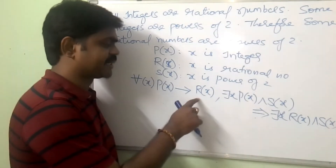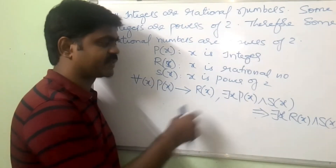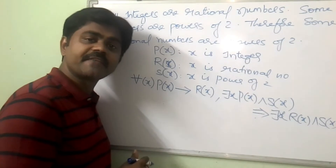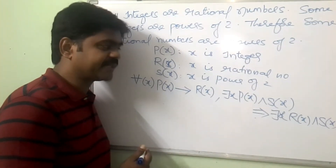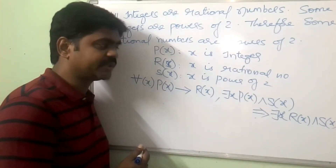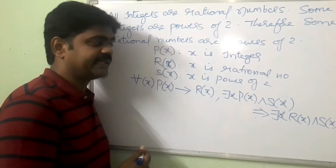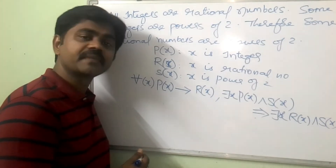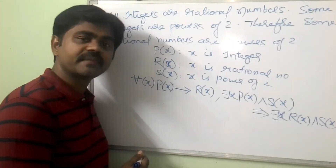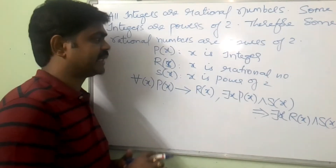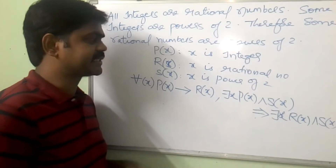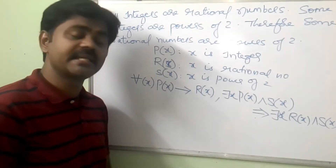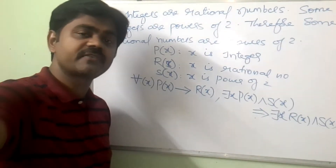So the first premise is: for all X, P of X implies R of X. The second premise is: there exists X, P of X and S of X. And finally, from that we should conclude there exists X, R of X and S of X.